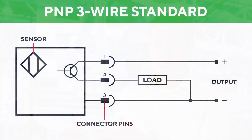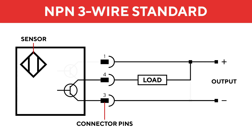An easy way to remember how each sensor output works is to look at the first letter. When we look at PNP, the first letter is P meaning positive, so that sensor is actually pulling its signal from the positive load of the sensor. And with NPN, the first letter is N meaning we're pulling a negative signal back to your PLC.